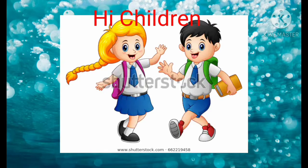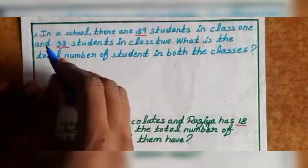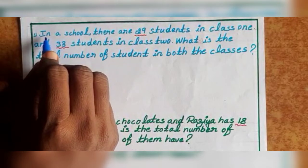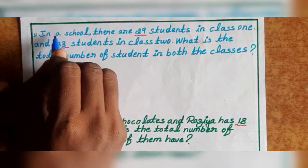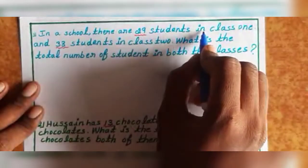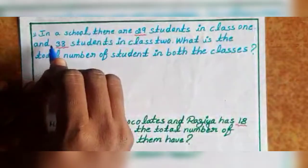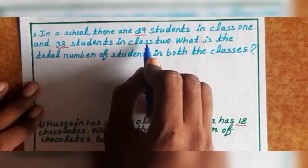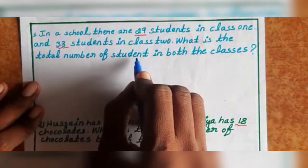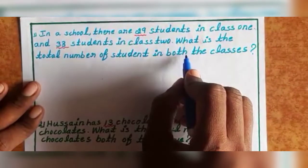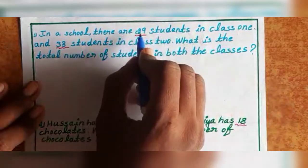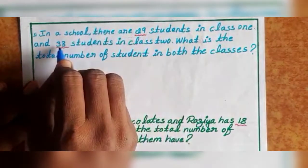Hi children. Next, first one — solve the problems in addition. First one: in a school there are 29 students in class 1 and 33 students in class 2. So what is the total number of students in both the classes? So first you can add 29 plus 33.